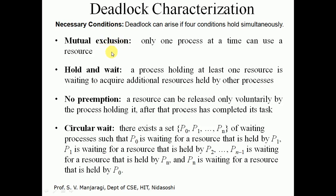The first condition is mutual exclusion — only one process at a time can use a resource. If there is a common resource and multiple processes try to access it simultaneously, only one process is allowed to use it and all others must wait. If those other processes are indefinitely waiting for the resource to be released, that may lead to deadlock.